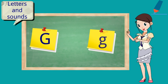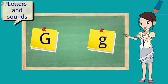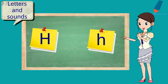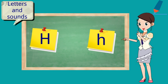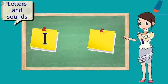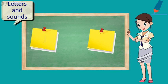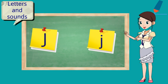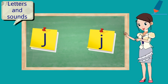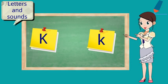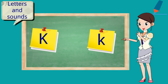The G says G. The G says G. Every letter makes a sound. The G says G. The H says H. Every letter makes a sound. The H says H. The K says K. The K says K.